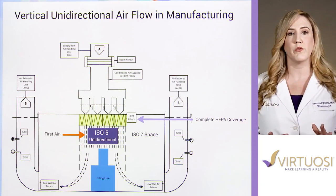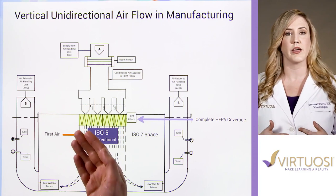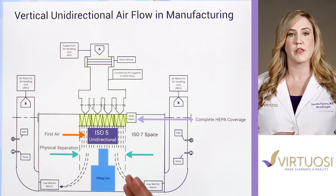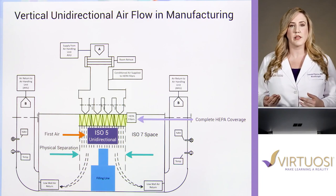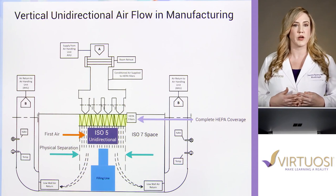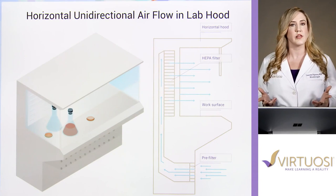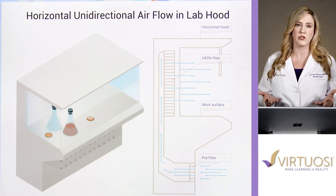Maintaining first air minimizes the potential for contamination and ultimately protects the product and therefore patient health. Unidirectional airflow is created by complete coverage of the supply area with HEPA filters. The air under the ISO 5 space is physically separated from the ISO 7 space via rigid plastic walls known as RABS, or restricted access barrier system. The air passes over the filling line, exits the space, and is captured by the low wall returns. Unidirectional airflow is also referred to as laminar airflow, and standalone equipment are called laminar airflow hoods, abbreviated as LAF.